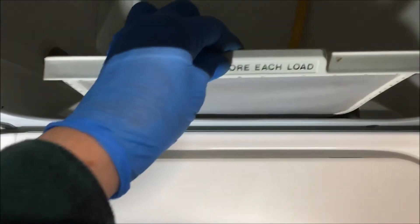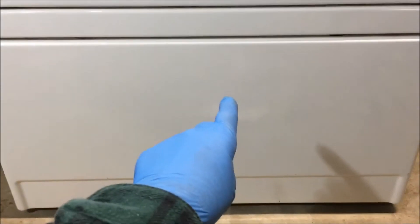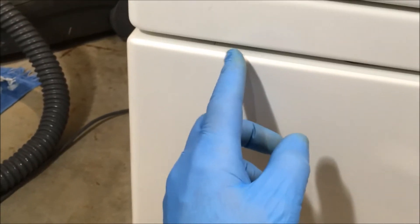Take the lint screen out. Now we need to get the lower kick panel off. There's two clips, one on either side, located about three and a half inches in.